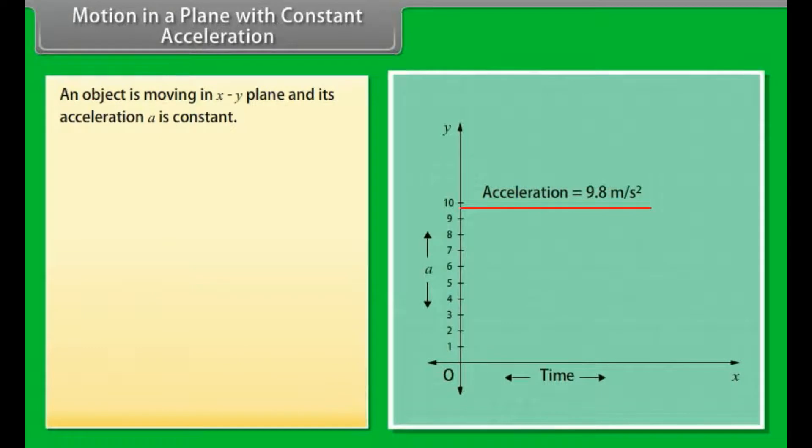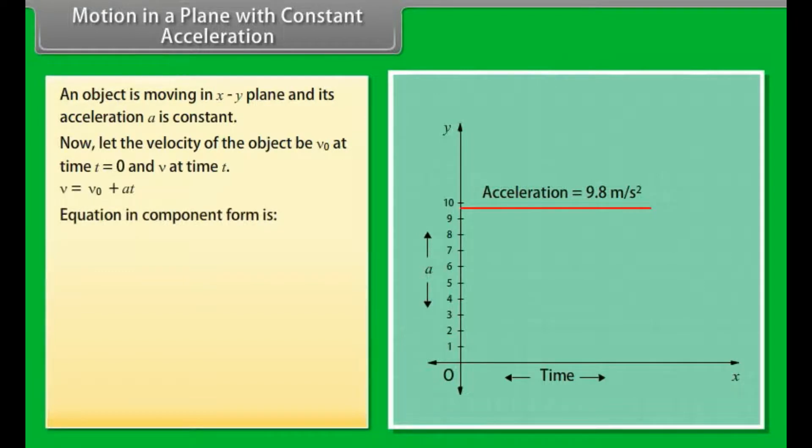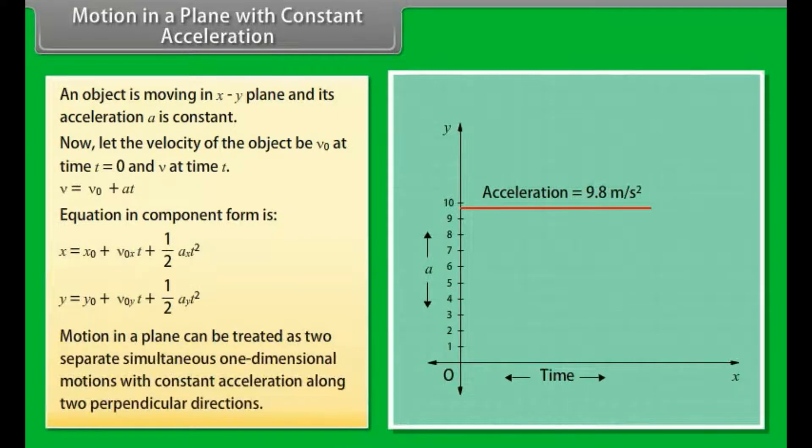Motion in a plane with constant acceleration. Let us take an example to understand. An object is moving in xy plane and its acceleration a is constant. Now, let the velocity of the object be v₀ at time t = 0 and v at time t. v = v₀ + at. This is the equation in component form. We conclude that motion in a plane can be treated as two separate simultaneous one-dimensional motions with constant acceleration along two perpendicular directions. These results are also valid for three-dimensional motion.